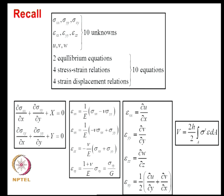Similarly, sigma_XX, sigma_YY, and sigma_XY which were independent of Z on the boundaries now become independent of Z throughout the interior. This is the basic postulate of a plane stress model. From this we use the constitutive law, get the strains, then use strain-displacement relations and arrive at a model for displacement. Resulting from that analysis there will be 10 unknowns: 3 stress components, 3 strain components, and 2 displacement components, plus epsilon_XY. There will be 2 equilibrium equations, 4 stress-strain relations, and 4 strain-displacement relations, so the number of unknowns and equations match, and we will be able to compute the strain energy in the body.